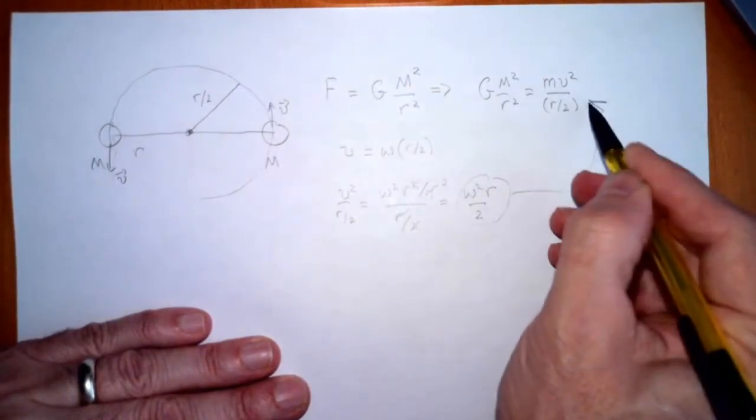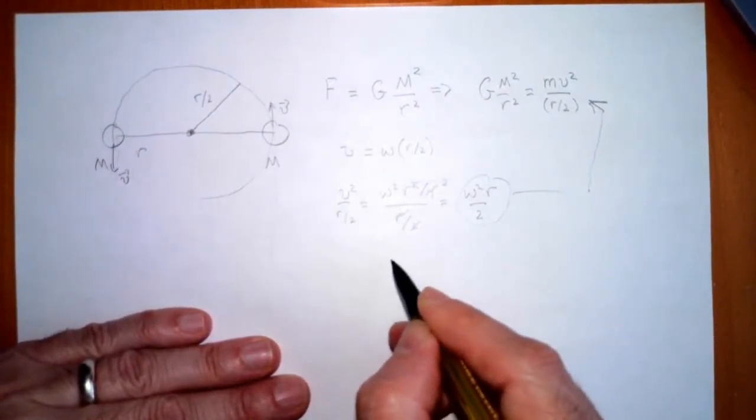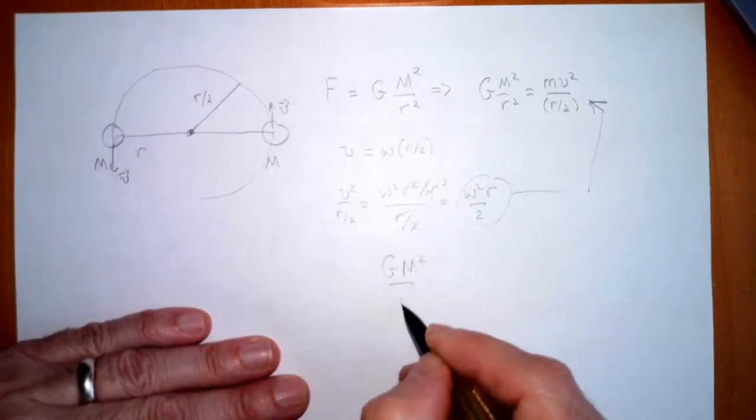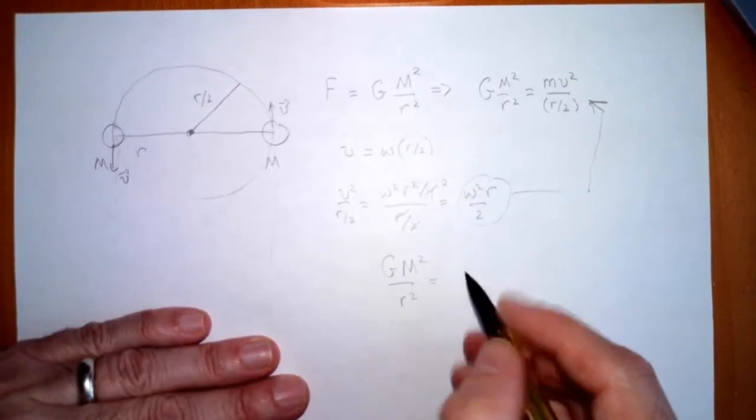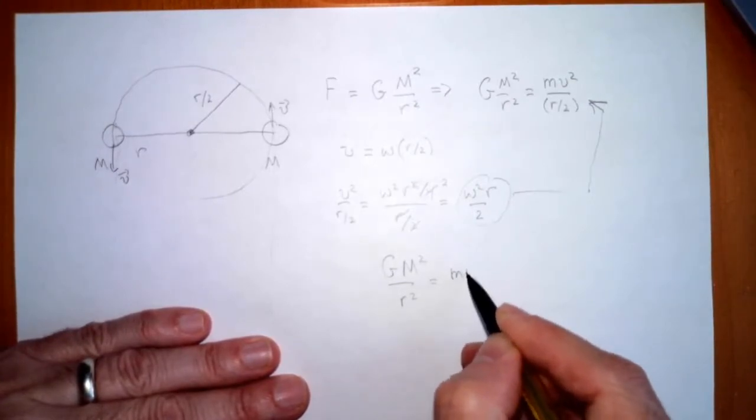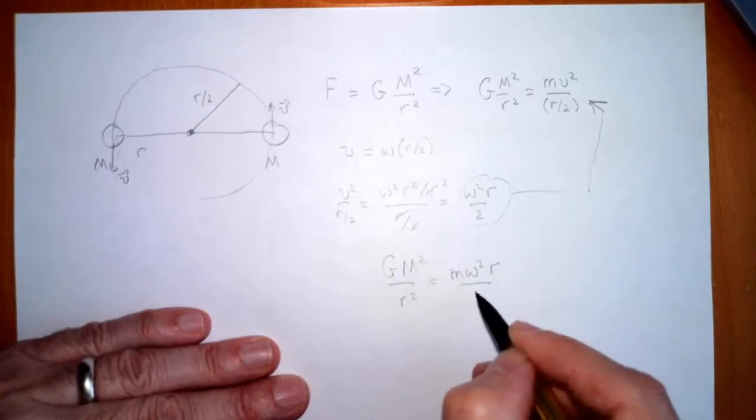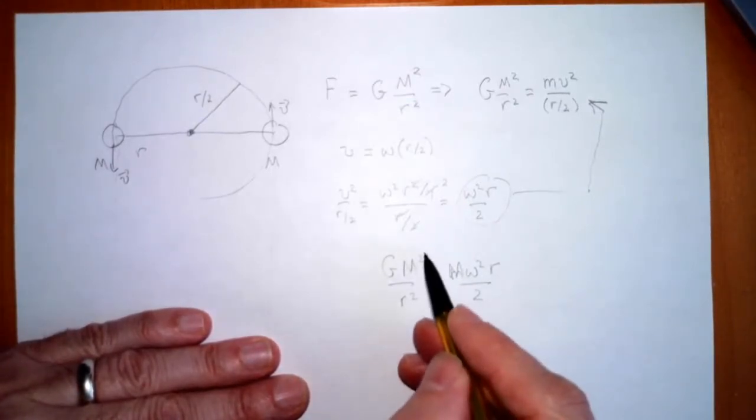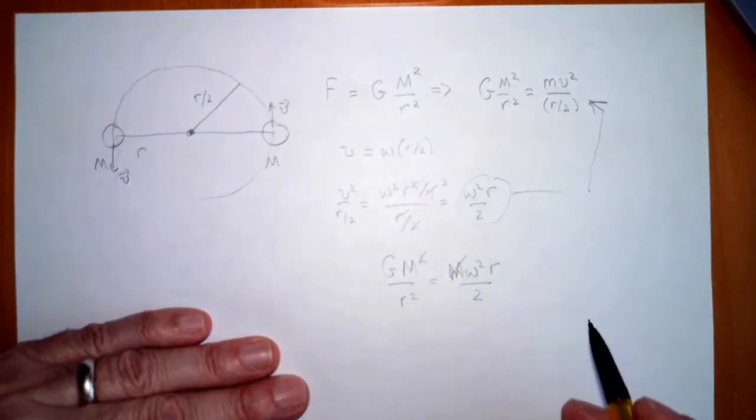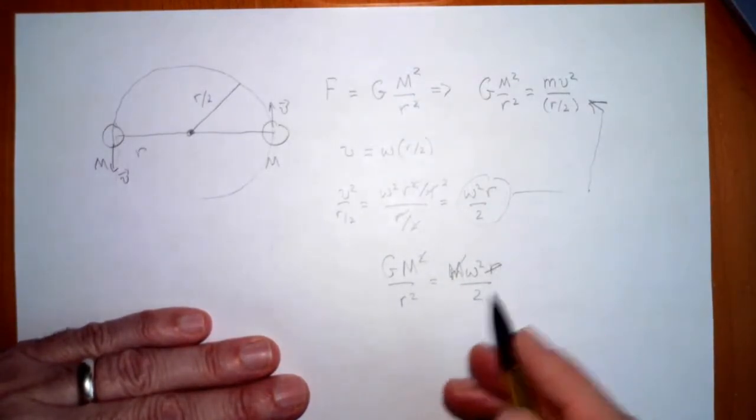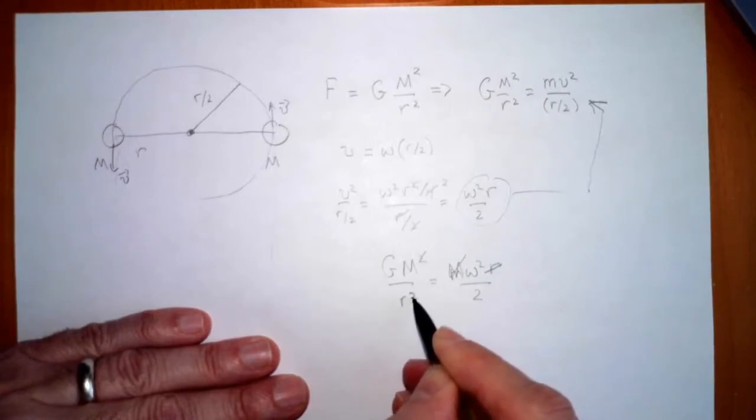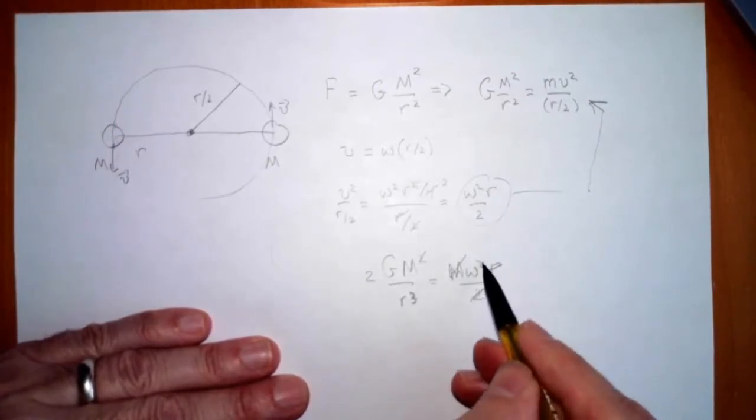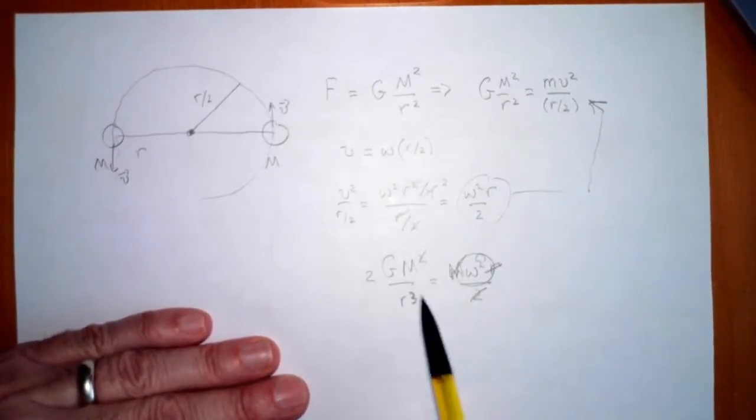I can take that, stick that guy in there, and I get gm squared over r squared, and over here I'm going to have m omega squared r over 2. And this m is the same m as that, so one of these m's cancels. And this r I can bring downstairs and make that an r cubed. And this 2 I can bring over here. So now you can see omega squared is looking like this.